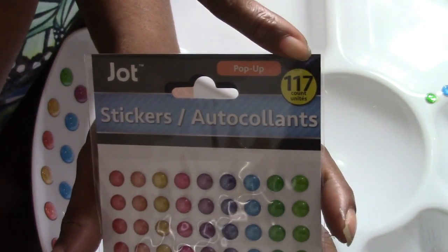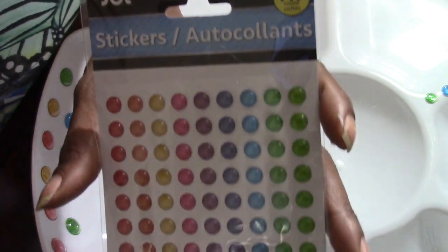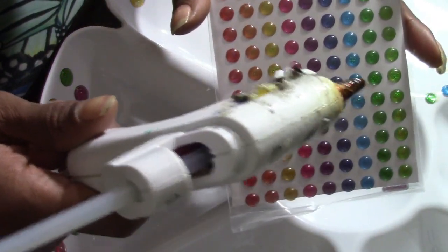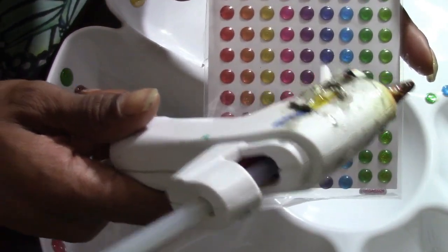And what I'm going to do is I'm going to place the candle plate mirror in the center. I'm just going to set it there so that I know where to stop lining my jewels at.